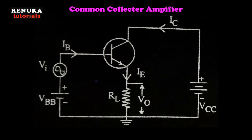The third type is the common collector configuration. Here, the collector is common to both input and output sides. The input is applied between base and emitter, and the output is taken across the emitter, with the load resistance RL connected to the emitter. The output signal in the emitter circuit follows the input signal since the voltage gain is nearly 1, so the input and output voltages are the same. That is why this circuit is also called an emitter follower.